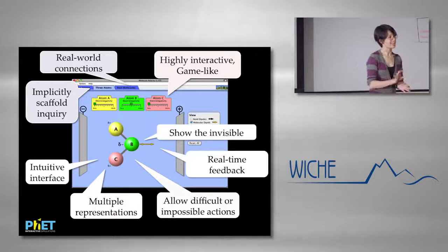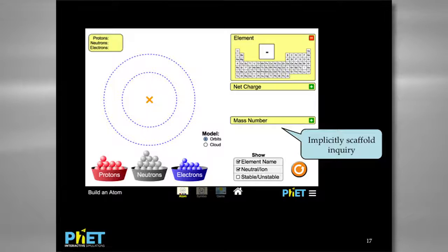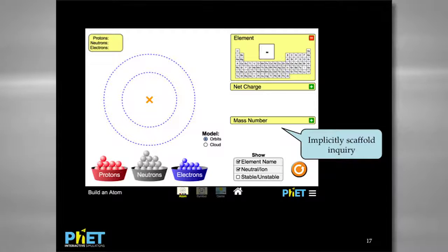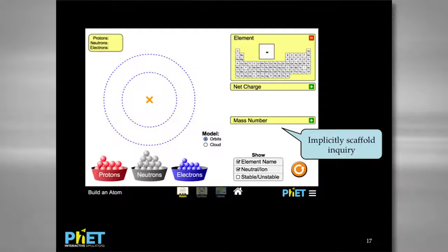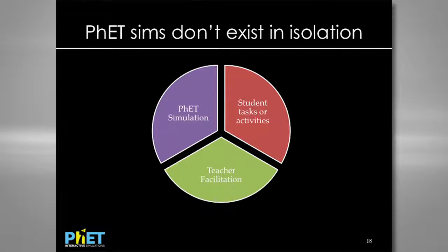I also mentioned implicit scaffolding — building up from small concepts to larger ones. The two examples from the sims you worked on were having multiple screens in a certain order, and having simple initial conditions with low cognitive load. Another approach: sometimes when a sim initially opens, some of the feedback is closed and minimized. In 'Build an Atom,' for example, those minimized elements mean students are much more likely to start dragging particles to build their own atom before trying to figure out how particles affect the mass number.